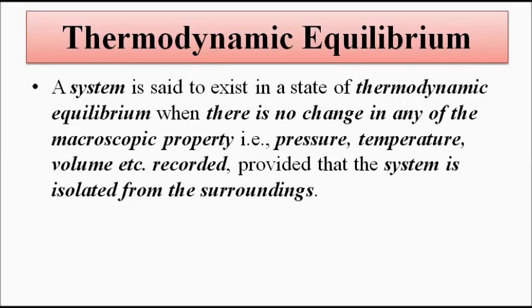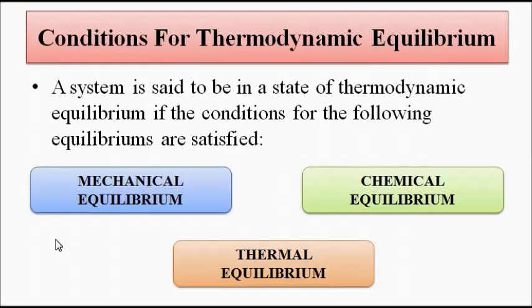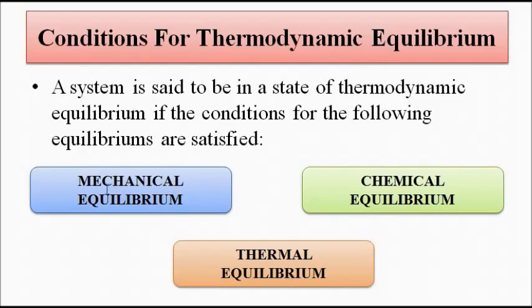For the system to exist in thermodynamic equilibrium, there are certain conditions that must be satisfied. Three equilibrium conditions must be achieved: mechanical equilibrium, chemical equilibrium, and thermal equilibrium. Let us discuss one by one what each of these means.